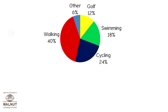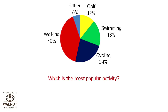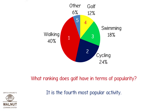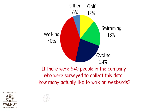Look at this pie chart. The people working in a software company were asked what activities they like to do on a weekend. Their answers were put in a pie chart. Look at the chart and answer the questions. What ranking does golf have in terms of popularity? It is the 4th most popular activity. If there are 540 people in the company who were surveyed, how many actually like to walk on weekends?